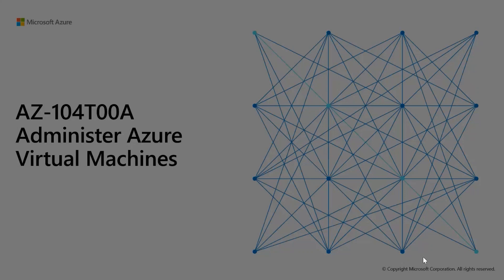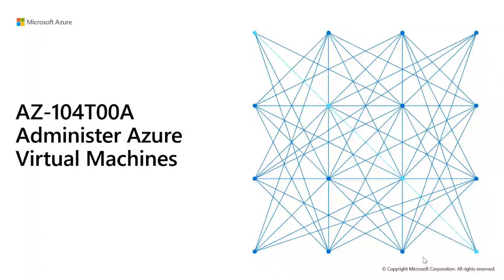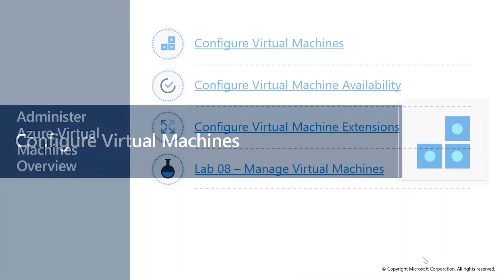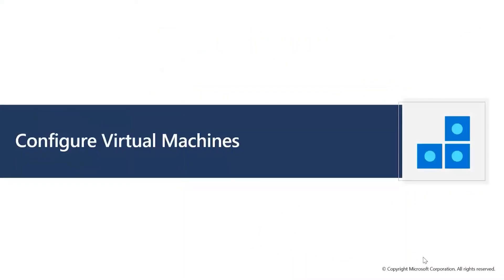A virtual machine is something where you configure availability, sizing, and everything. What is a virtual machine? It works like a physical machine but is onboarded on the cloud side. It works similar to a physical machine, but you do not need to purchase any physical device.